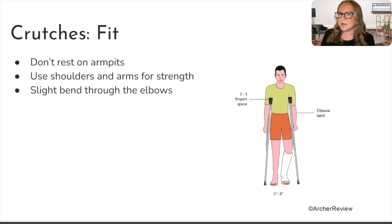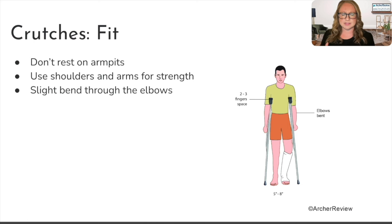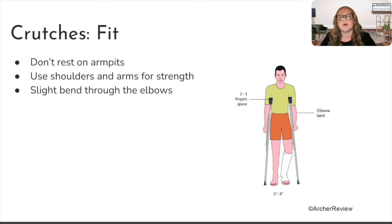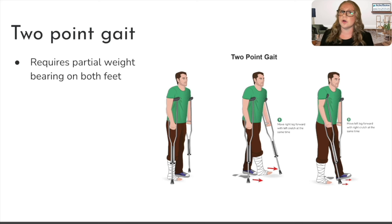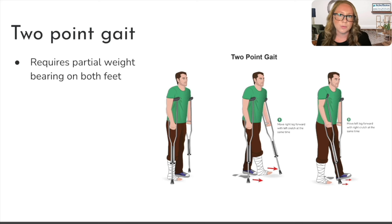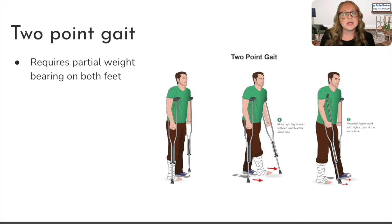The last assistive device to master are crutches. First, make sure they fit your client. We want two to three finger spaces between their armpit or axilla and the crutch. If it's really wedged against there, we can cause skin breakdown and even nerve damage. We also want a slight bend through the elbows, which allows them to engage their arm muscles and support themselves instead of leaning all their weight on the crutches — which again can cause nerve damage. After you make sure the crutches fit, educate your client on how to use them, and to do that you need to know your different crutch gaits.